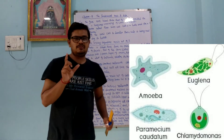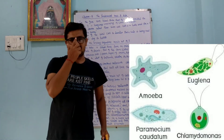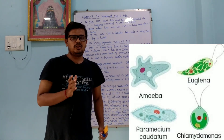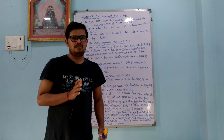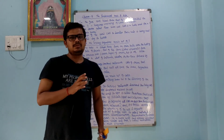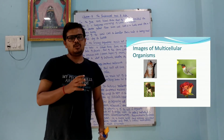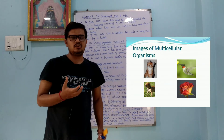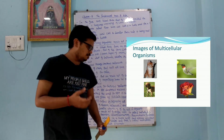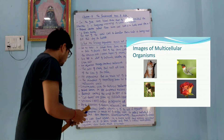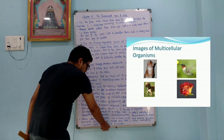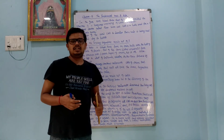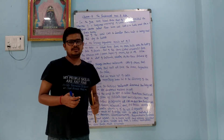If an organism is made up of one type of cell, like amoeba or paramecium, it is called a unicellular organism. If an organism is made up of more than one different type of cell, it is called a multicellular organism. Examples of multicellular organisms are fungi, plants, and animals. We are also an example of a multicellular organism.